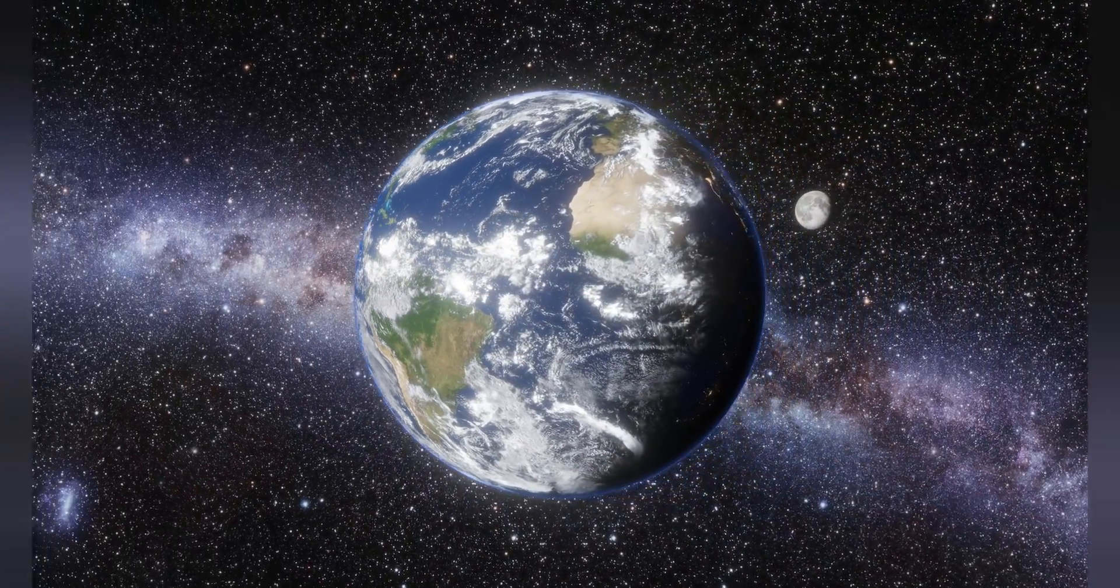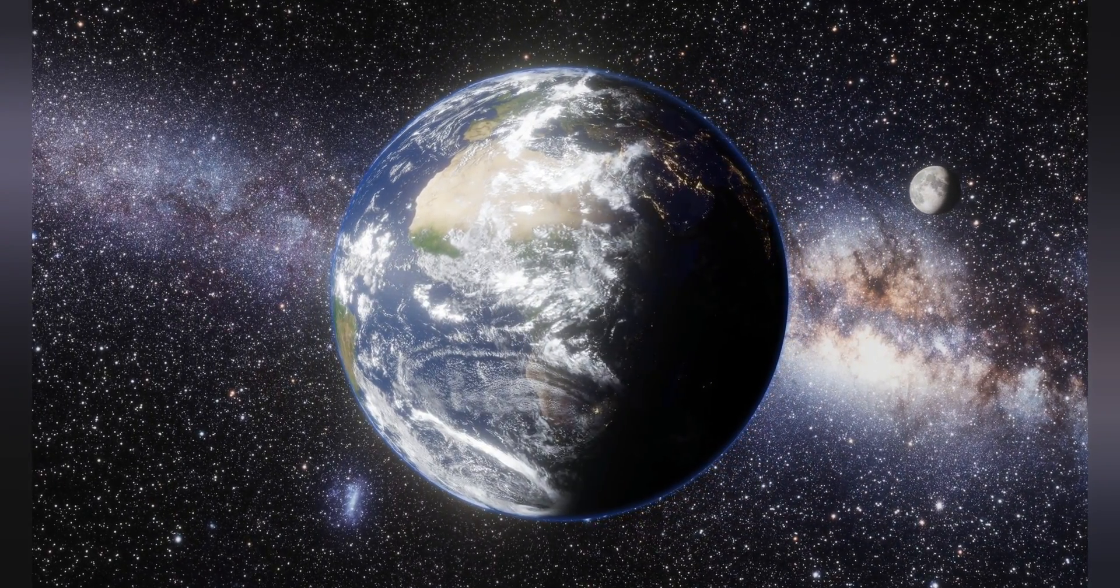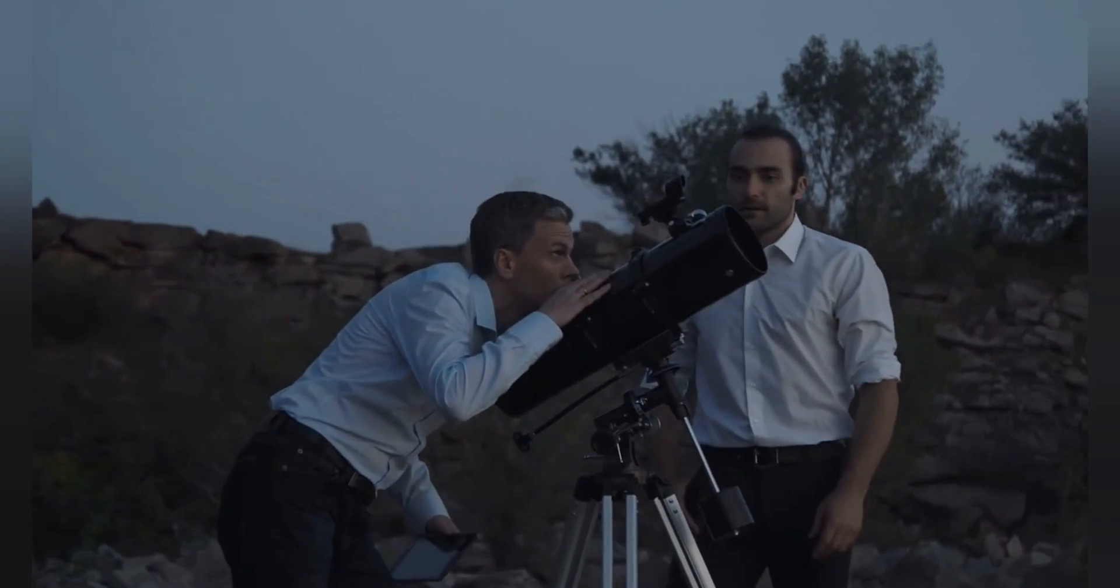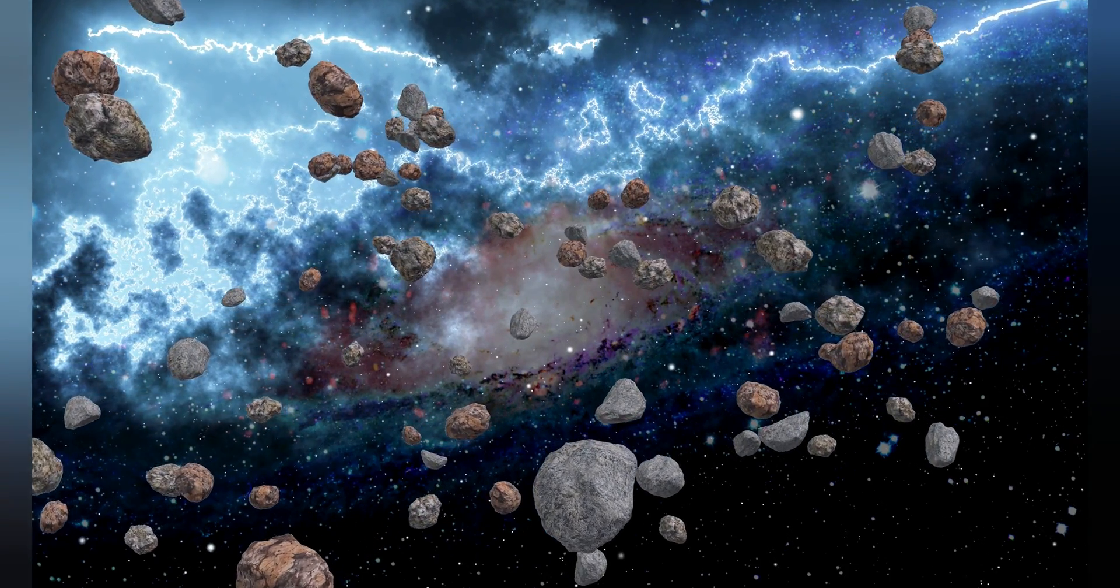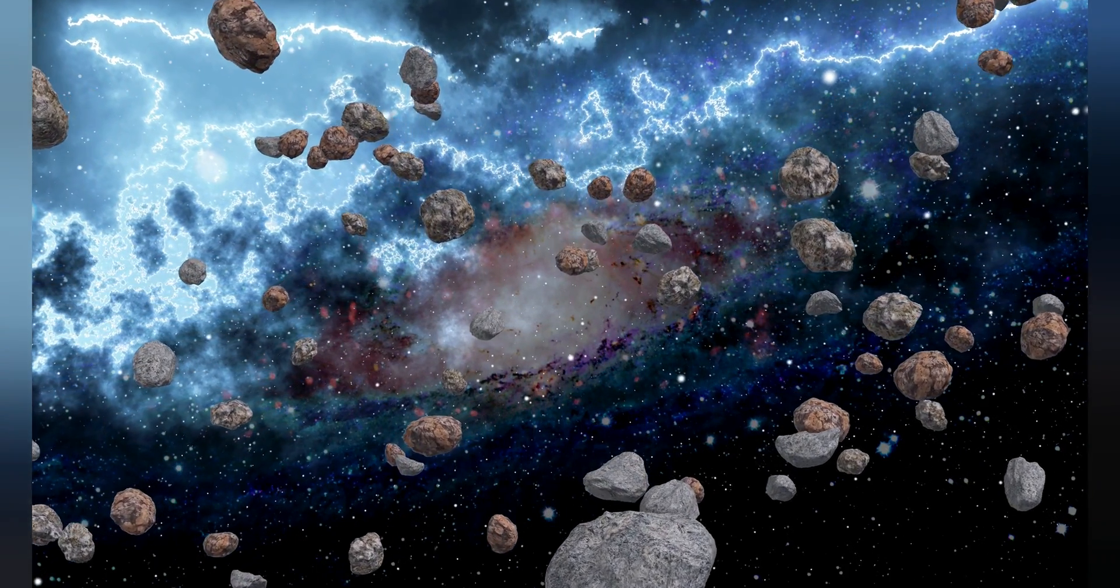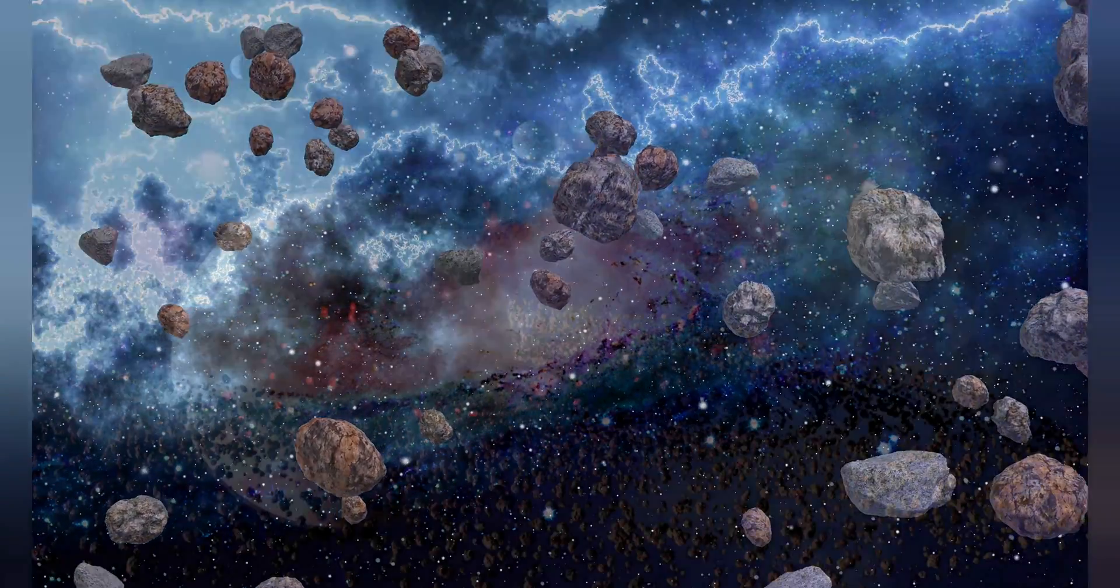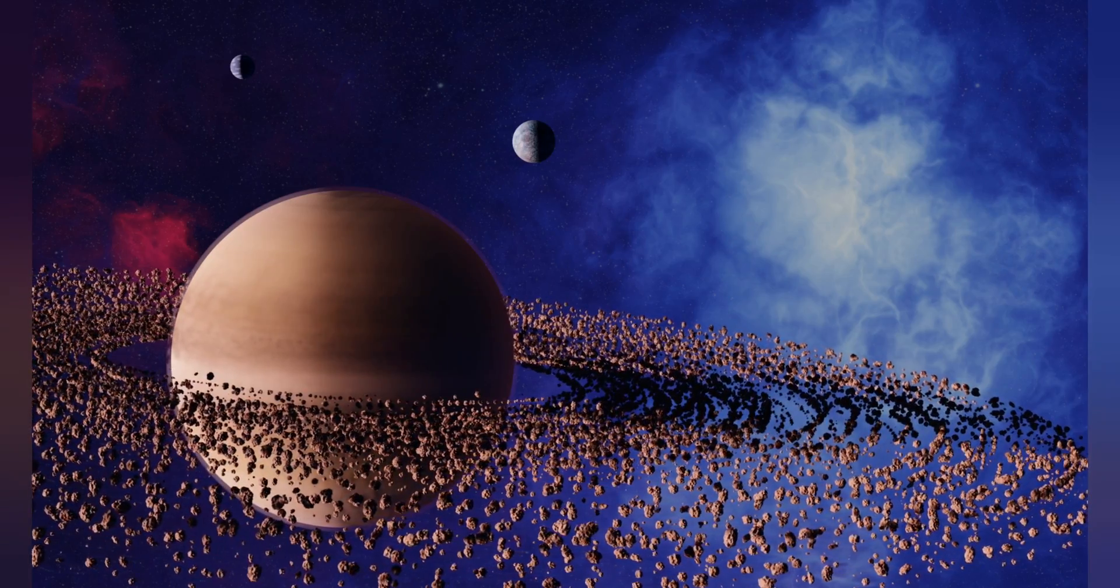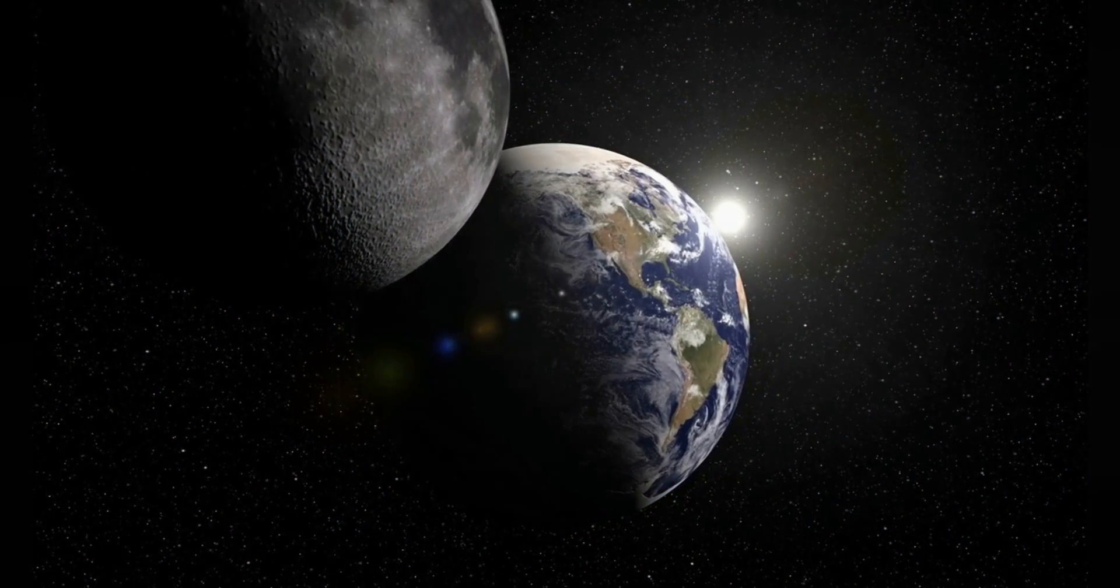Secondly, origin. The origin of our moon is still a subject of debate among scientists, but it is widely believed that it formed from the debris created by a massive impact between Earth and another celestial body early in the history of the solar system. This is a very different scenario than what is thought to have occurred with other moons, which are believed to have formed from the same material as their host planet.